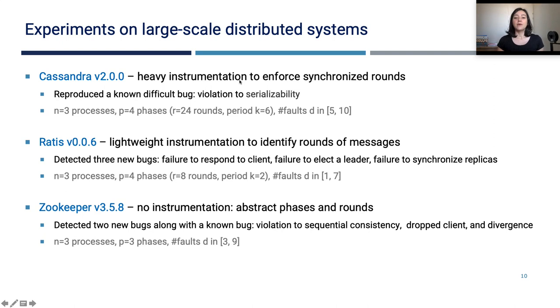In the heavy instrumentation case, we synchronize the execution of all processes and enforce a lockstep execution by controlling the order of all messages in the system. In the lightweight instrumentation, we just intercept the messages and identify the round in the execution by only reading the contents in the messages. And in the third case, we don't instrument the system at all, but we abstract the phases and the rounds in the execution by some timeouts and use the system's API methods to isolate some processes in the execution.